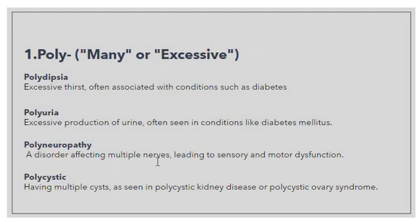Then we have 'polycystic', which means having multiple cysts, as seen in polycystic kidney disease or polycystic ovary syndrome. In this case also, we use 'poly' to show multiple things. So to summarize: 'poly' is a prefix that denotes multiple or excessive. The examples we discussed are polydipsia, polyuria, polyneuropathy, and polycystic.